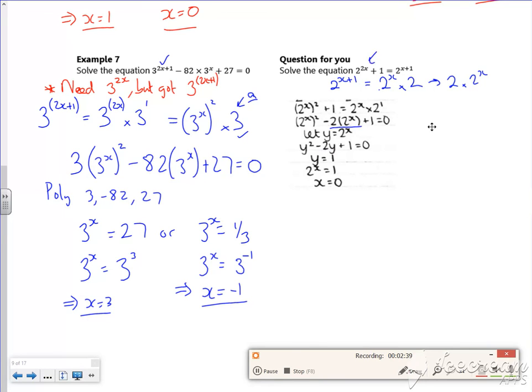And 2^(2x) becomes (2^x)^2. So I'd have that equation, then just straight from there, I'd do poly for 1, minus 2, 1.